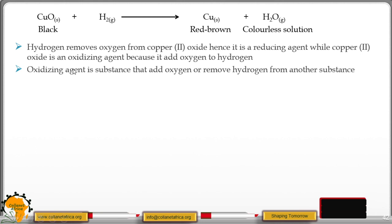Oxidizing agent is a substance that adds oxygen or removes hydrogen from another substance. Reducing agent, on the other hand, is a substance that adds hydrogen or removes oxygen from other substances.